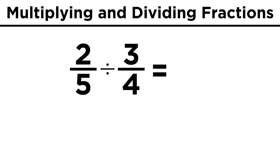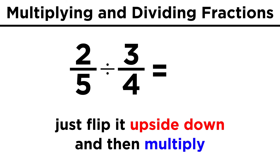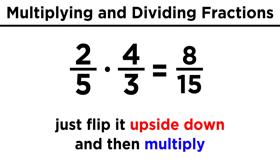This will work the same way when we divide fractions by other fractions. Two fifths divided by three fourths is the same as two fifths times four thirds. We take the second fraction, flip it over, and then multiply to get our answer, which in this case will be eight over fifteen.